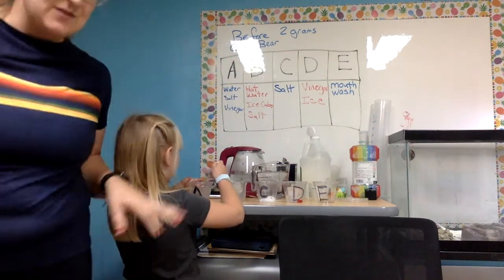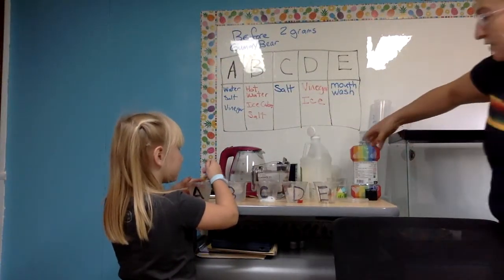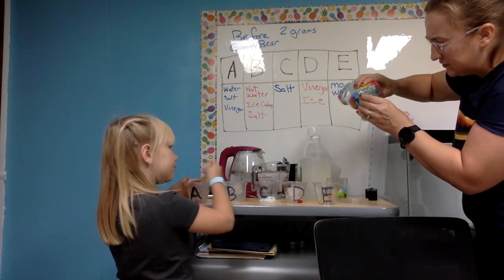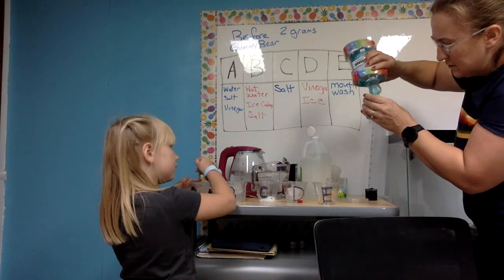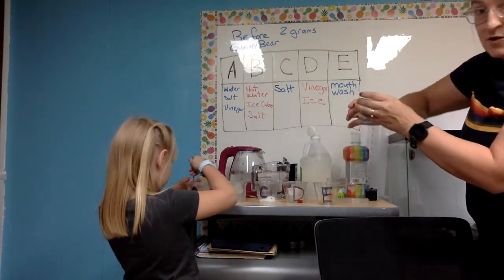And cup E. We are adding mouthwash. So here we go for cup E. Mouthwash. Oh, I guess maybe I should measure for this one. 100 milliliters. Is it minty? This is minty. Here we go, mouthwash.